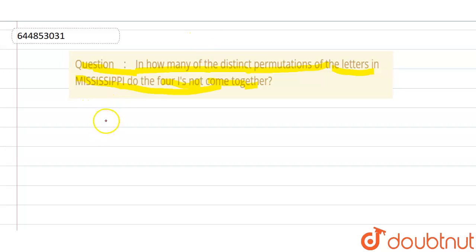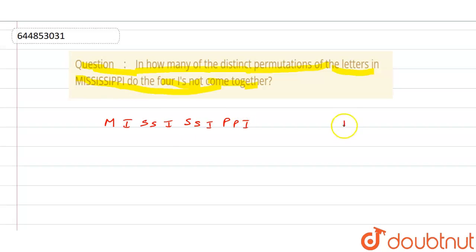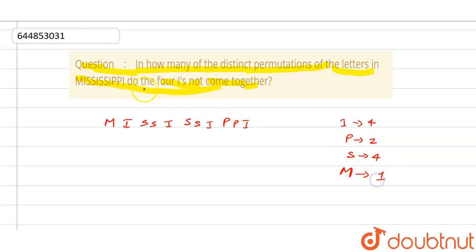The word Mississippi has: four I's, four S's, two P's, and one M. Counting all letters: 4 + 4 + 2 + 1 = 11 total letters, which checks out.